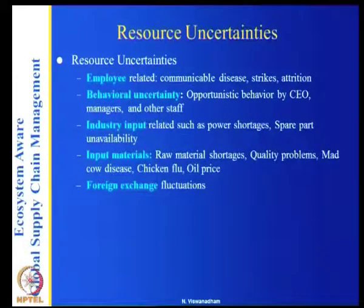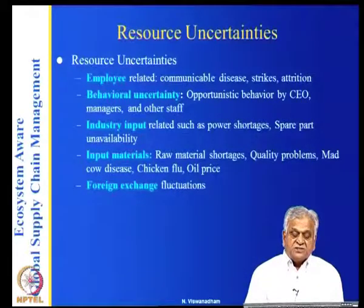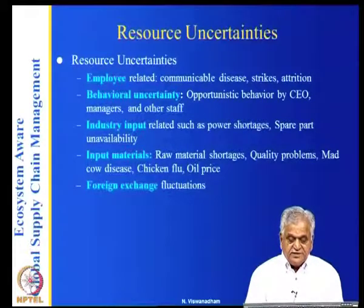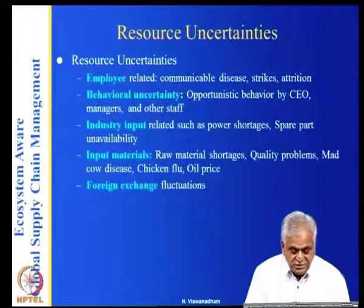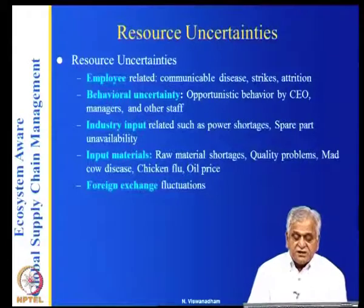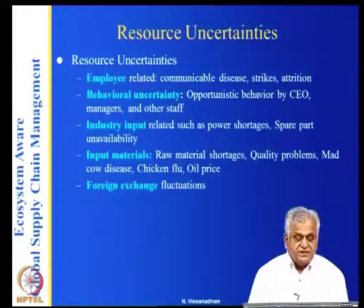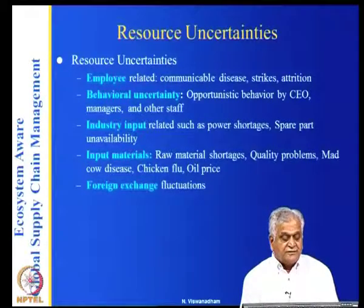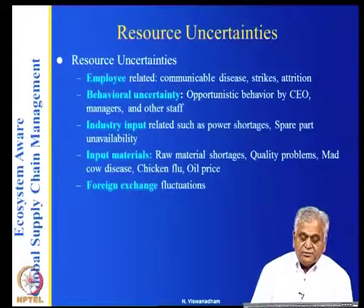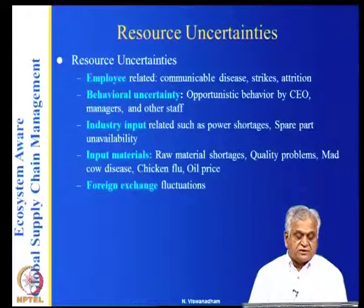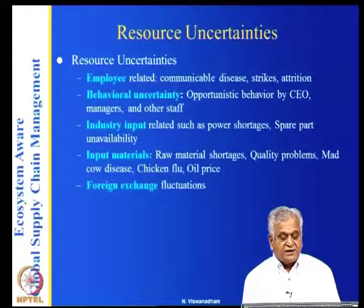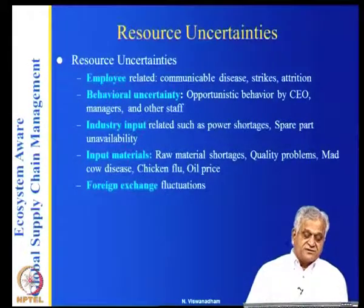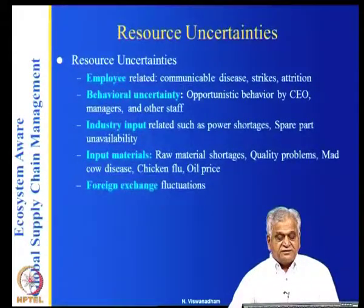Resource uncertainties include employer-related risks such as communicable diseases (H1N1 drastically reduced working hours and employee productivity), strikes, and attrition. Behavioral uncertainty includes opportunistic behavior by CEOs, managers, and staff. Industry input-related risks include power shortages, spare parts unavailability, raw material shortages, quality problems, mad cow disease, chicken flu, oil prices, and foreign exchange fluctuations.